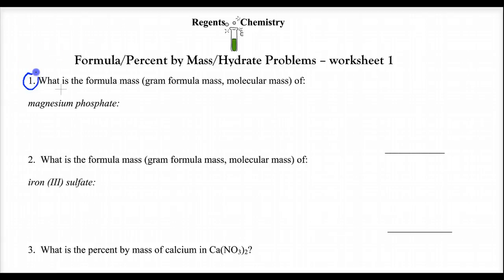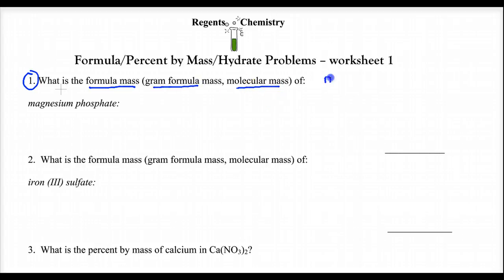Number one asks: what is the formula mass? It has a couple of synonyms — formula mass, gram formula mass, molecular mass — they all mean the same thing. They're the mass per formula. You're going to learn that means the mass per one mole, but for right now, it's the mass per formula.